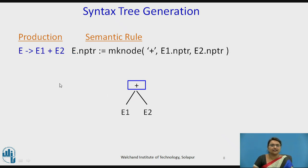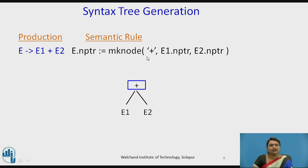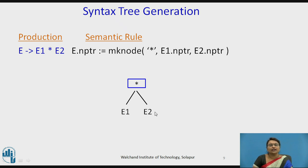For the statement E1 plus E2, there are no leaf nodes here — these are already internal nodes, so E1 and E2 are already created. Only the plus node is created and the pointers of E1 and E2 are assigned at the left and right nodes. Similarly for multiplication, a node is created and the pointer of left node E1 and right node E2 are assigned — they may be leaf nodes or internal nodes.